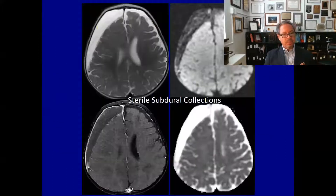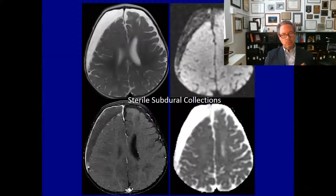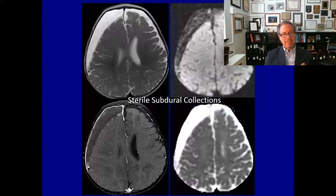Here we have a patient with sterile subdural collections. On the upper left, the T2 shows the right-sided collection to be bright. Post-gadolinium there is peripheral enhancement. On the diffusion weighted image, the collection is dark, and it is bright on the ADC map, implying no restriction of motion. This confirms the fluid is not infected — it is a simple sterile subdural collection in a child with Haemophilus influenzae meningitis.